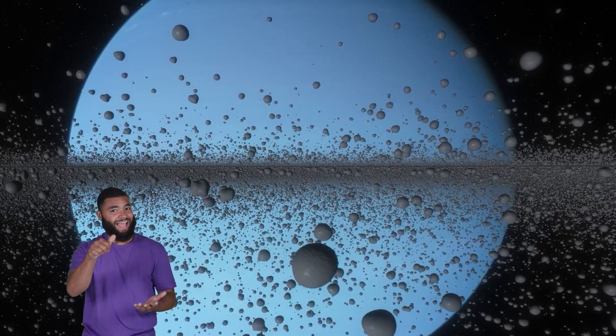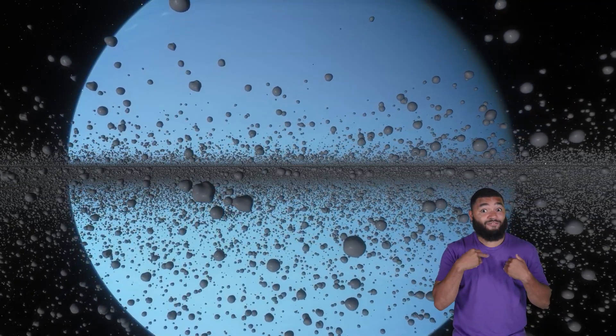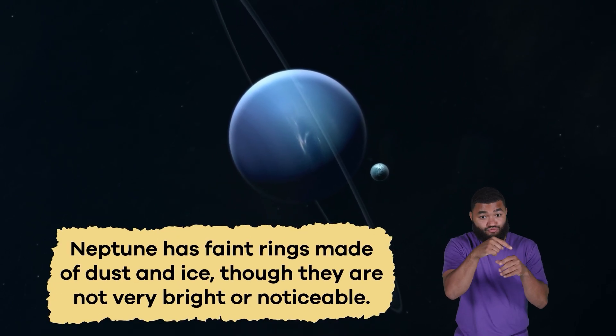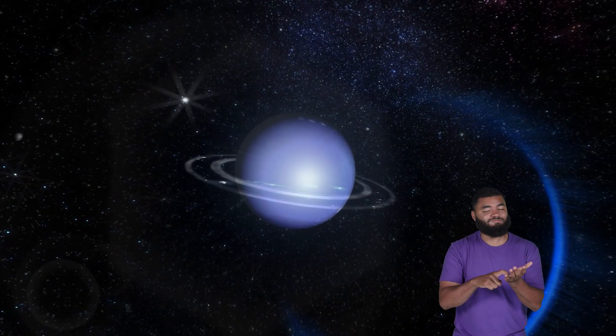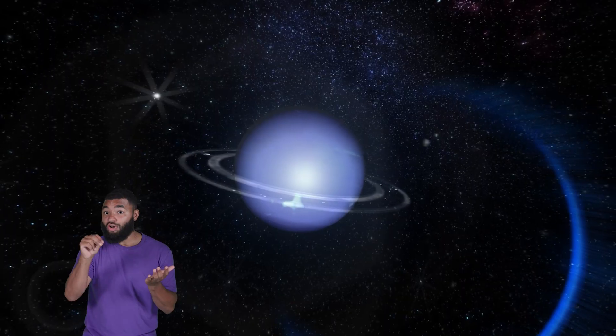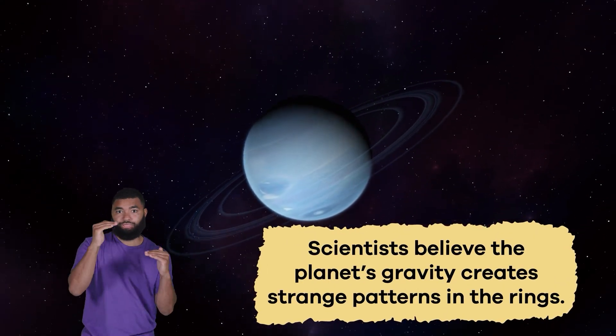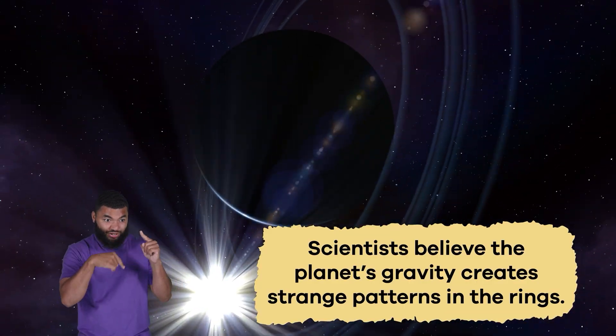Would it surprise you to learn that Neptune has rings? Because it does! Neptune has faint rings made of dust and ice, though they are not very bright or noticeable. Unlike Saturn and other planets, Neptune's rings are uneven. Scientists believe the planet's gravity creates strange patterns in the rings, which make them super unique.